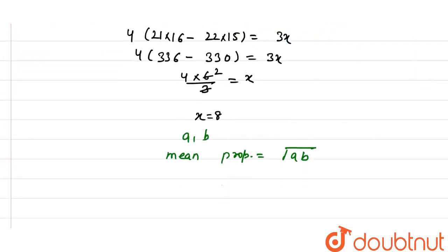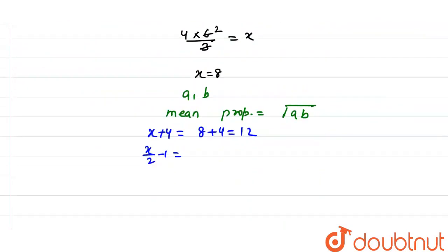Substituting x equals 4, we get x plus 4 equals 8, and x by 2 minus 1 equals 2 minus 1 equals 1.